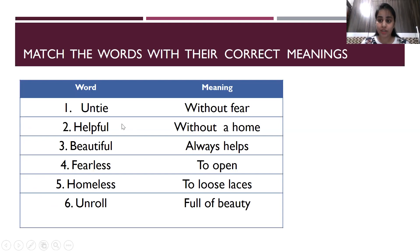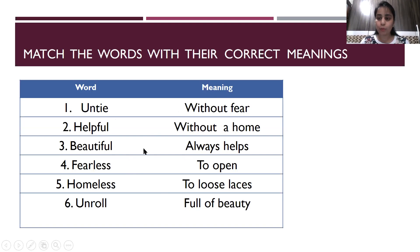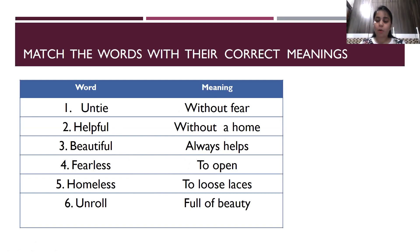Similarly, 'helpful' — the suffix 'full' means someone who is full of help, who always helps. 'Beautiful' — someone who is full of beauty. 'Fearless' — 'less' means to decrease, so it means without fear. 'Homeless' — without a home. 'Unroll' — it means to open something. Untie means to loosen laces and unroll means to open something. So prefix and suffix always add some meaning to the word.